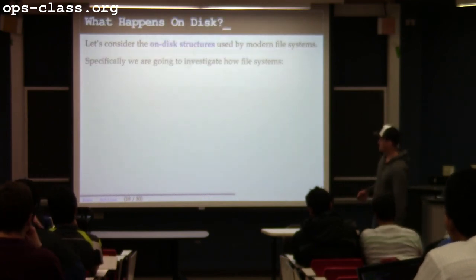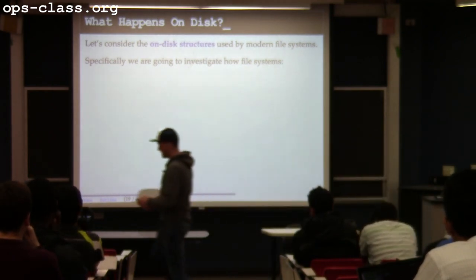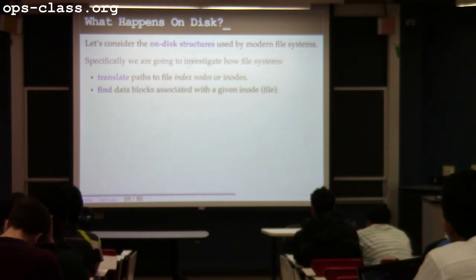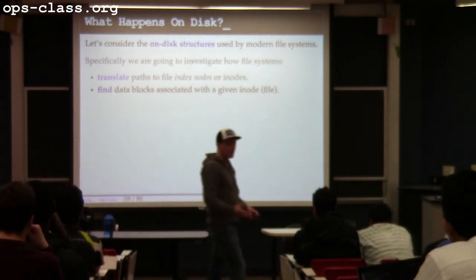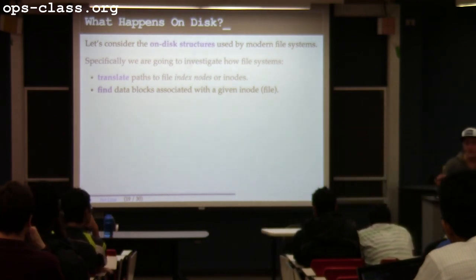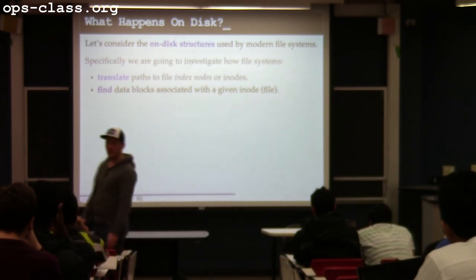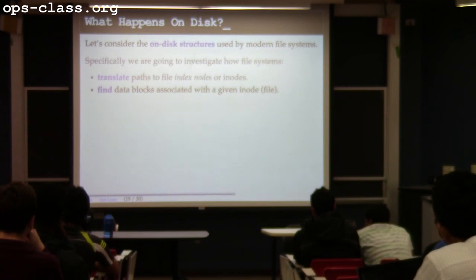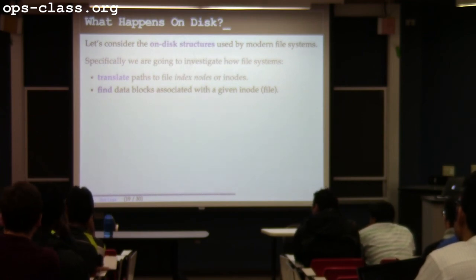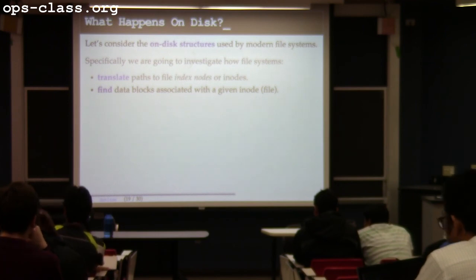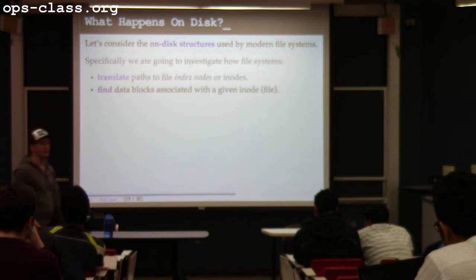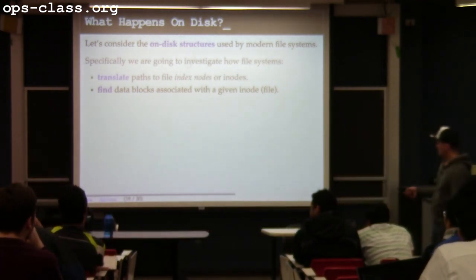We're going to investigate how file systems do two things: translate paths and find data blocks. When I open a file, I need to translate the human-readable string into some information about the file — we call this an inode. Each file has one inode. Then, starting from there, I need to be able to locate all of the data blocks for that inode. We're going to talk about path name translation and finding data blocks associated with the file — this is where there are interesting design choices you really ought to know about.